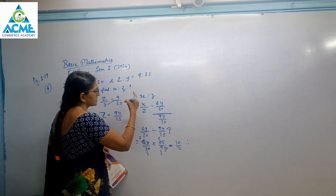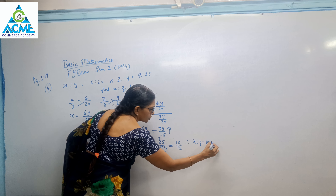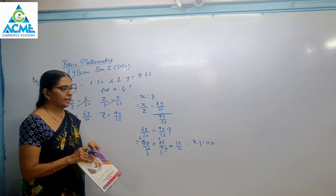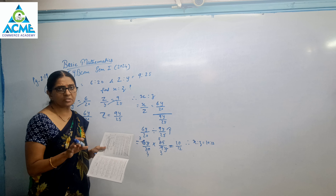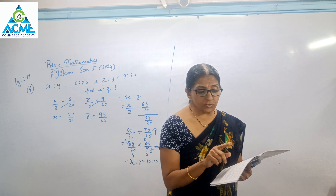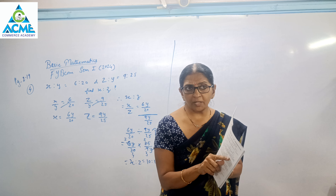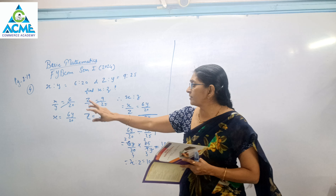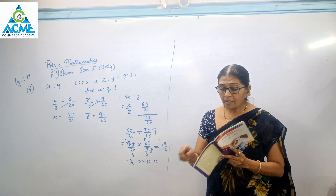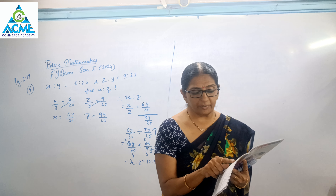Therefore, what is the ratio of x is to z? x is to z is equal to 10 is to 12. So this is how we find it. The original question had a mistake, so you would have done the correction. The options given in sum 4 may not match, so you need not consider those options. Now we will start with sum number 5.